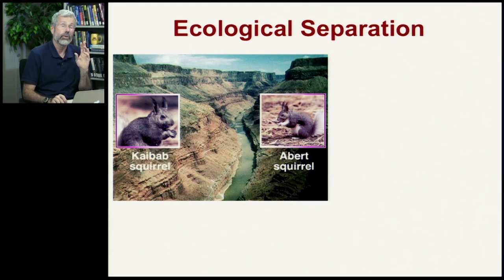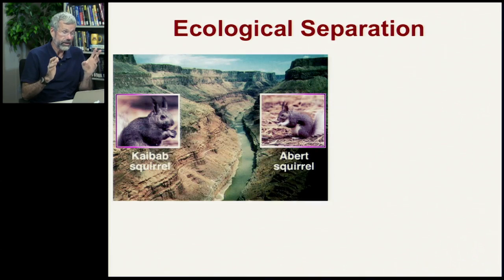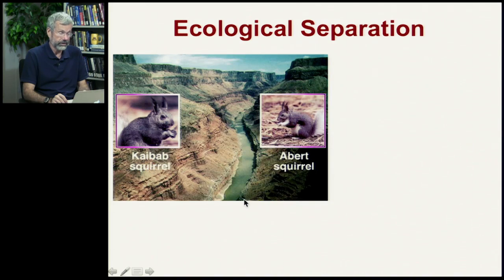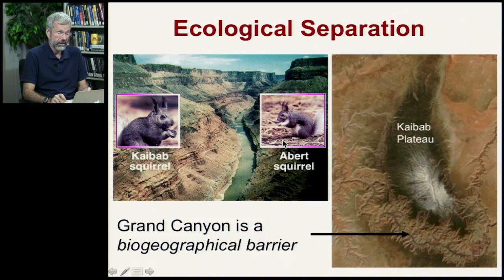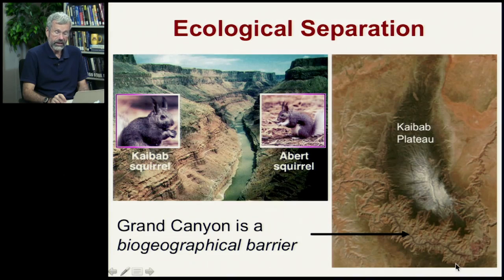Let's first look at prezygotic isolation. The most intuitive way to think about this is ecological separation — you have some physical barrier like the Grand Canyon, which is a massive barrier. The Kaibab squirrel doesn't make it across to the other side to mate, and likewise the Abert's squirrels can't either, so there's no way they can mate with each other.